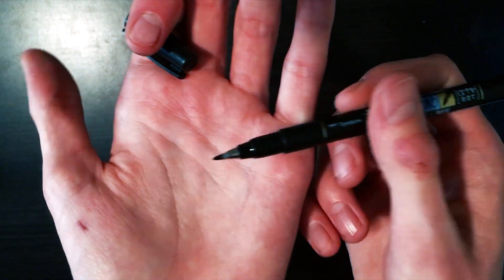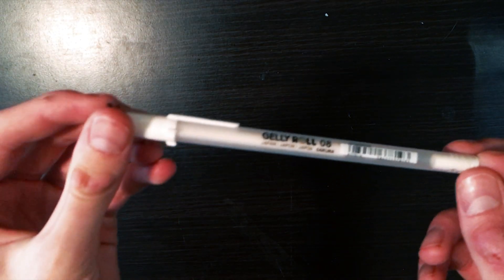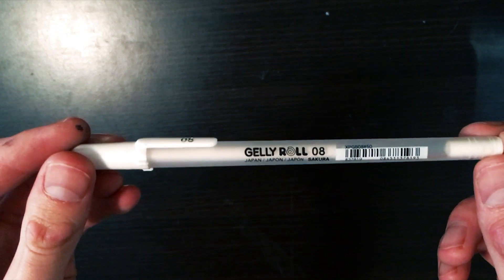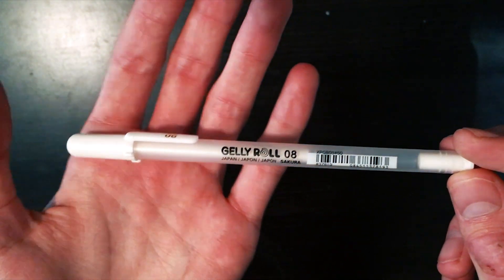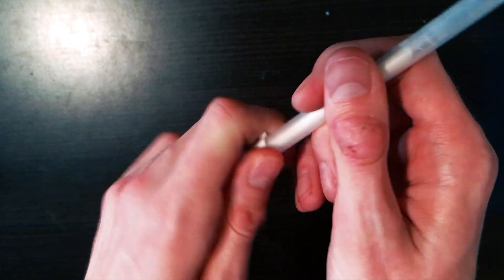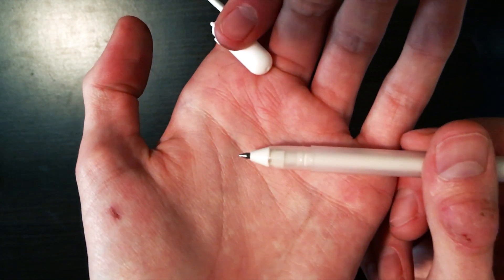Lastly, in pens, I will be using my Sakura White Jelly Roll Pen. This is an absolutely fantastic jelly roll pen. Great white thin lines that can add some great accents to your Inktober pieces.